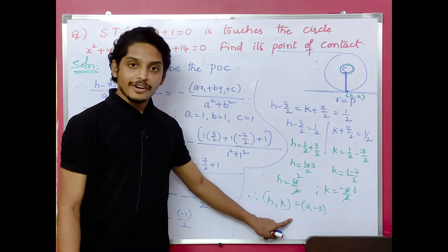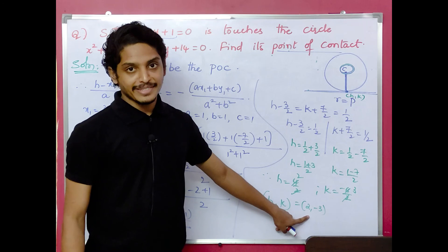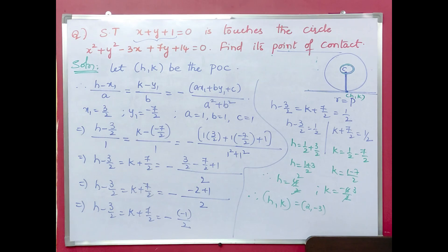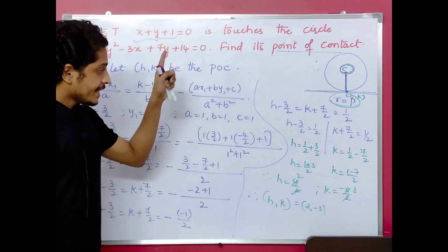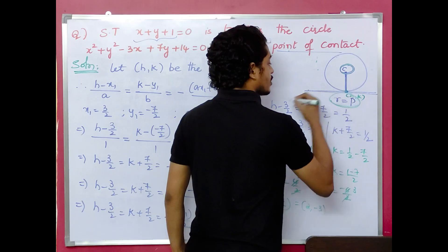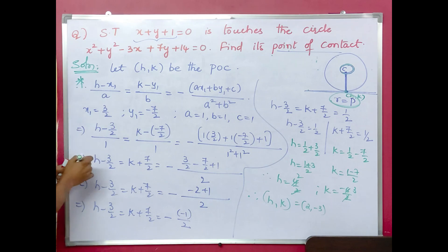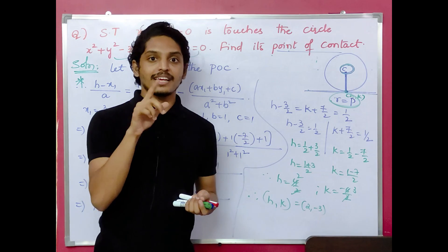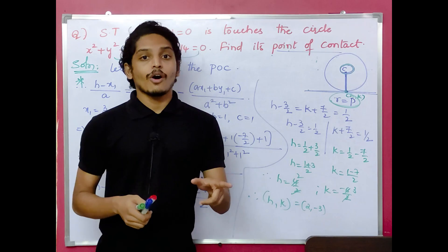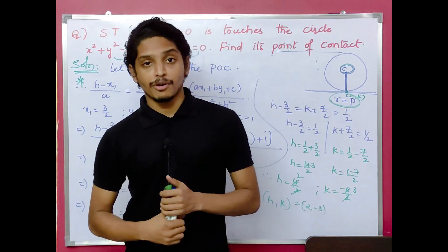The point of contact of the line to the circle is 2 comma minus 3. So we answered both questions: first showing r equals p to prove tangency, then finding the point of contact. This is a very important concept and question.